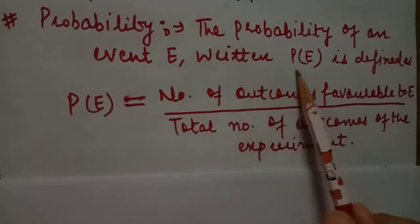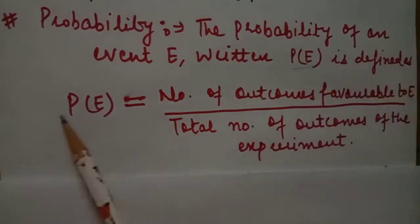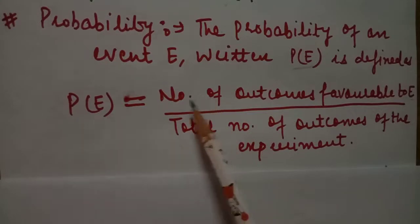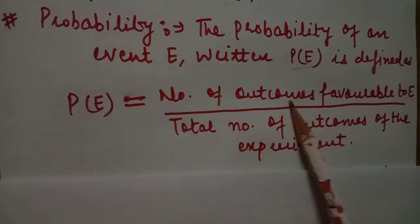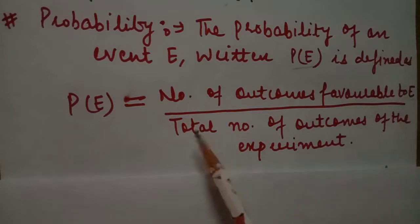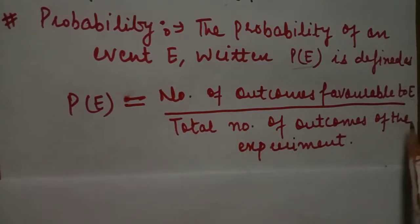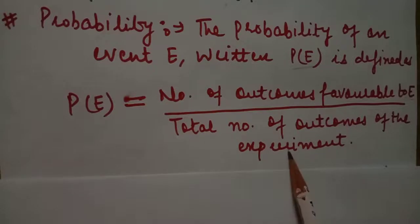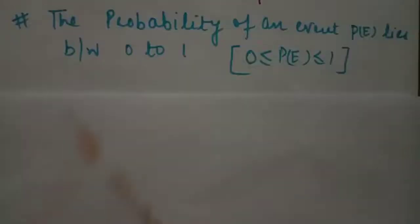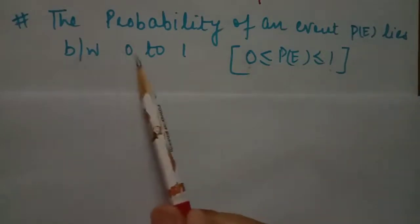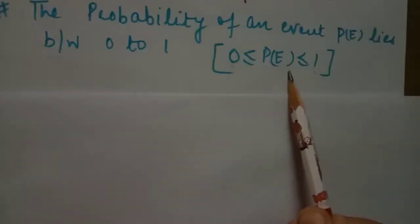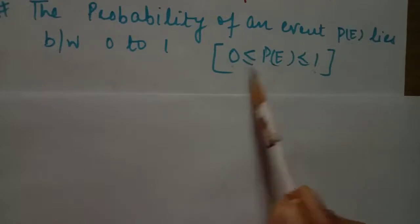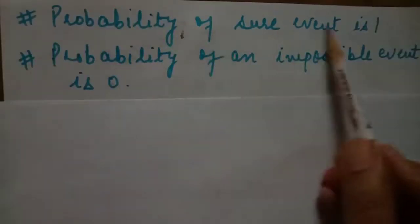The probability of an event E, written P(E), is defined as: P(E) = number of favorable outcomes to event A divided by total number of all possible outcomes of the experiment. The probability of an event always lies between 0 and 1. The probability of a sure event is 1 and the probability of an impossible event is 0.